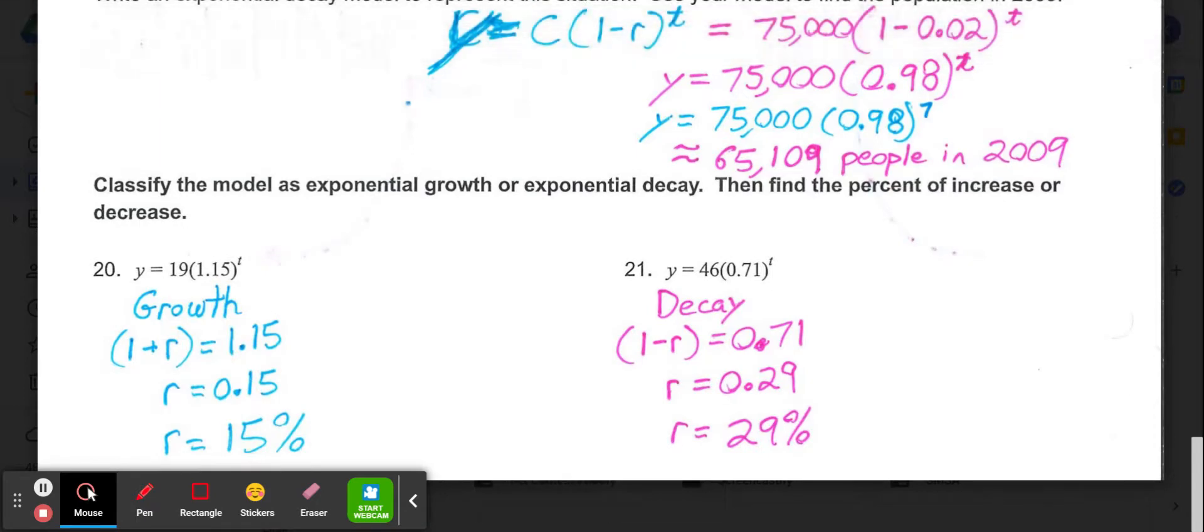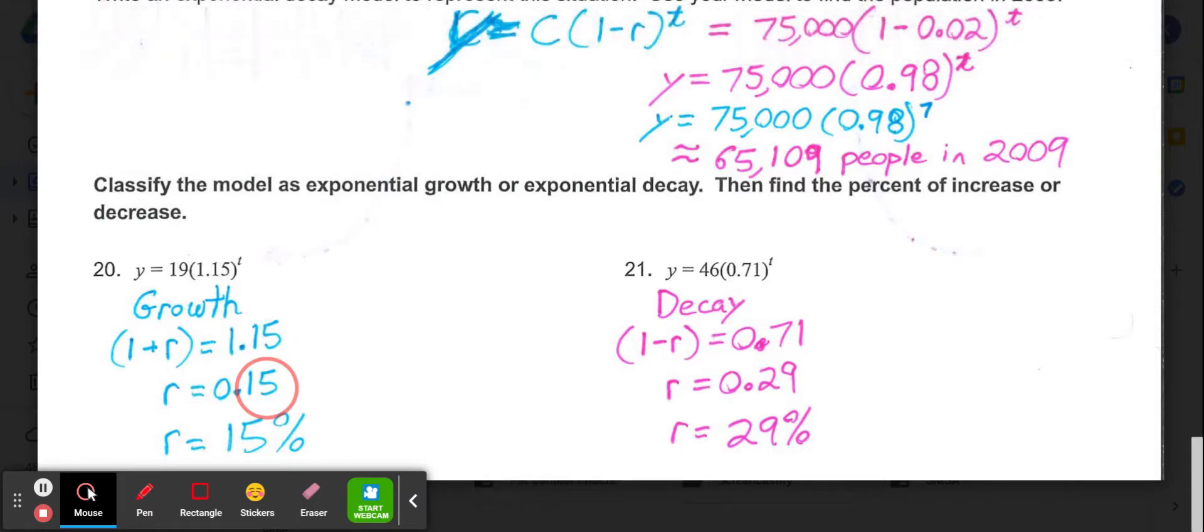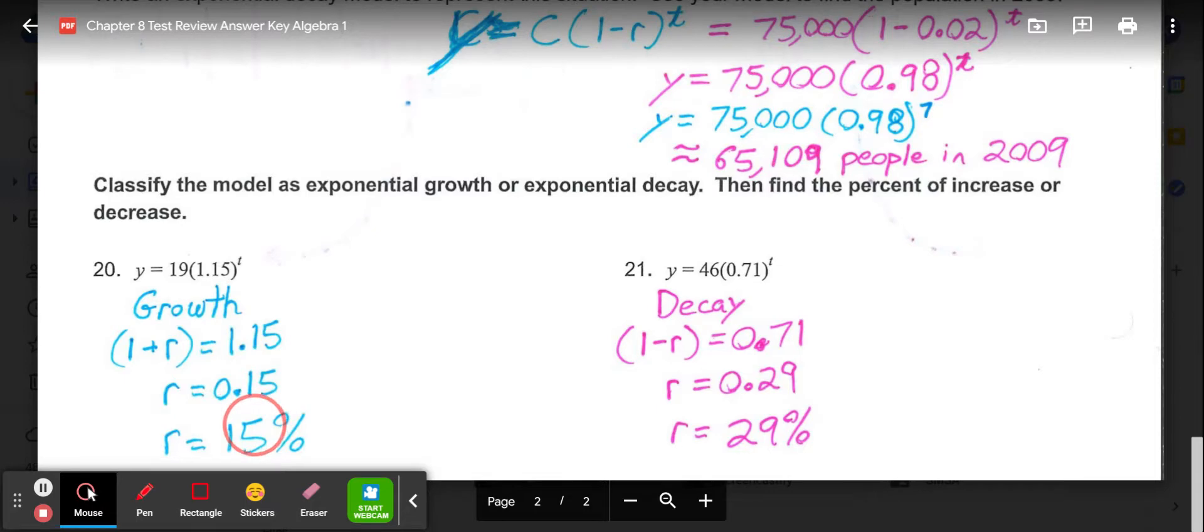Then moving down to our last two problems. So on the last two problems it says classify the model as growth or decay, then find the percent of increase or decrease. So in this case, all we want to look at to start is the number in the parentheses. If it's greater than 1, we have growth. Less than 1, we have decay. So number 20, it's 1.15, meaning it's growth. So to find the rate, our rate is going to be figured out from taking the 1.15 and subtracting 1. So our rate is 0.15. So then when we convert that back to a percentage, multiply that by 100. So 0.15 times 100 gives us 15%.